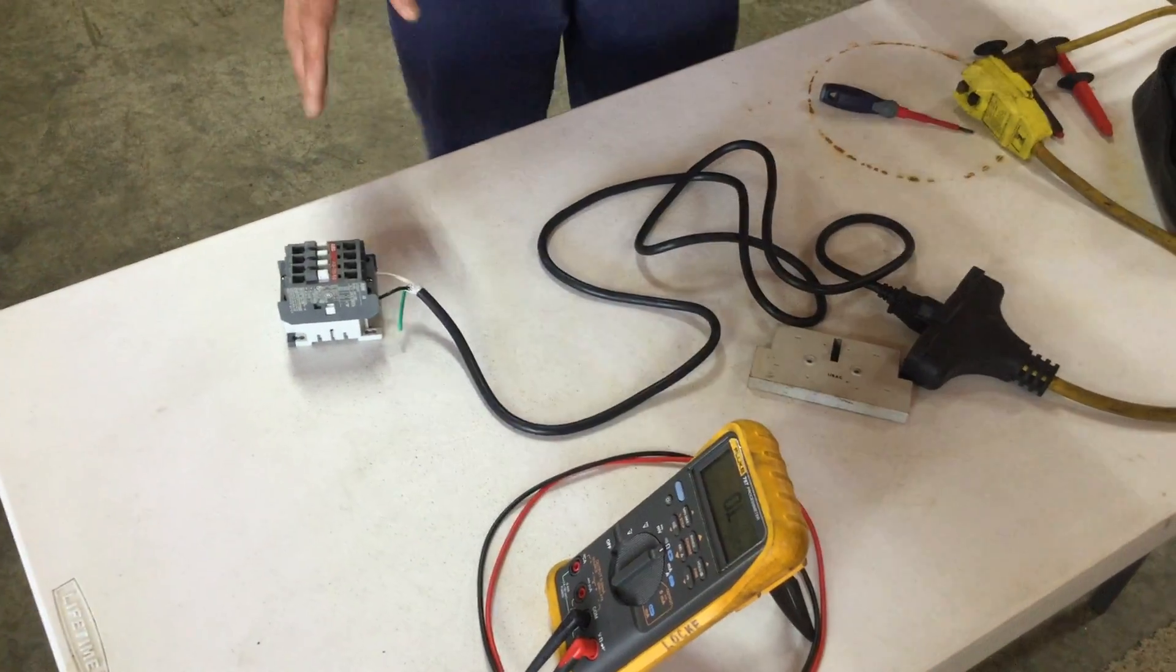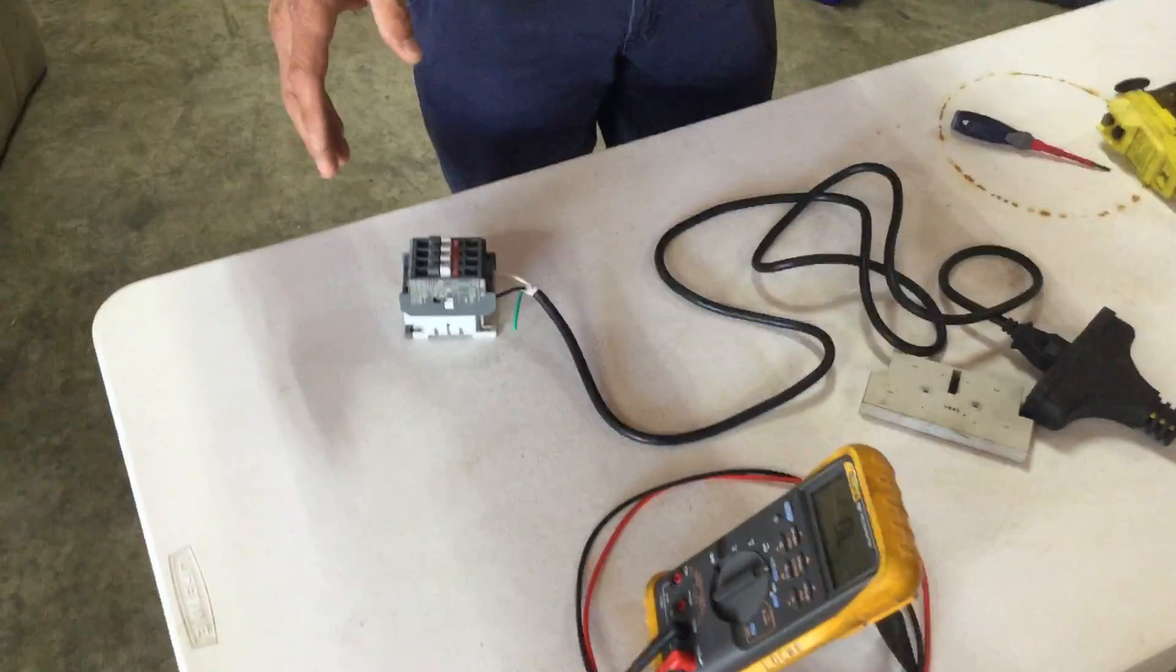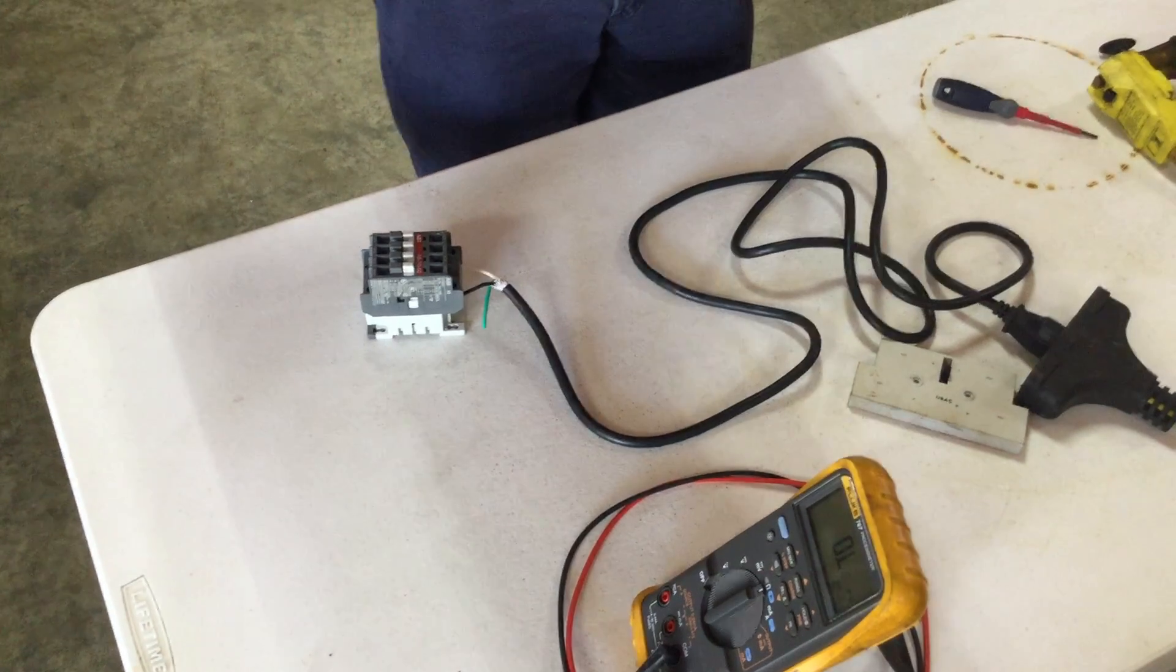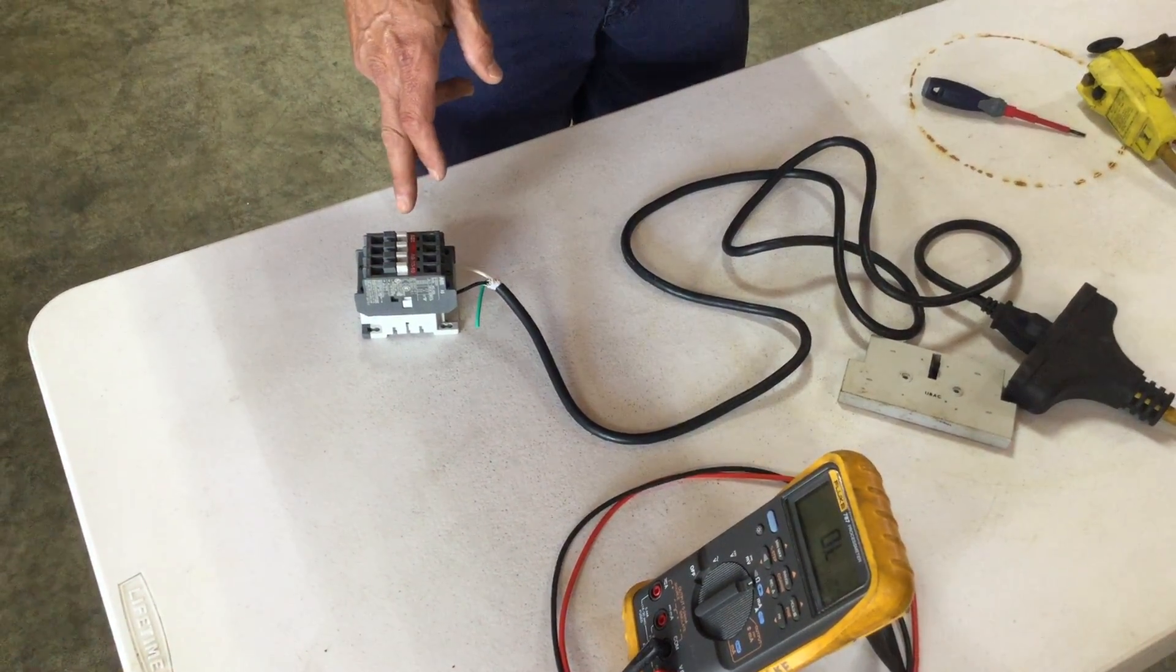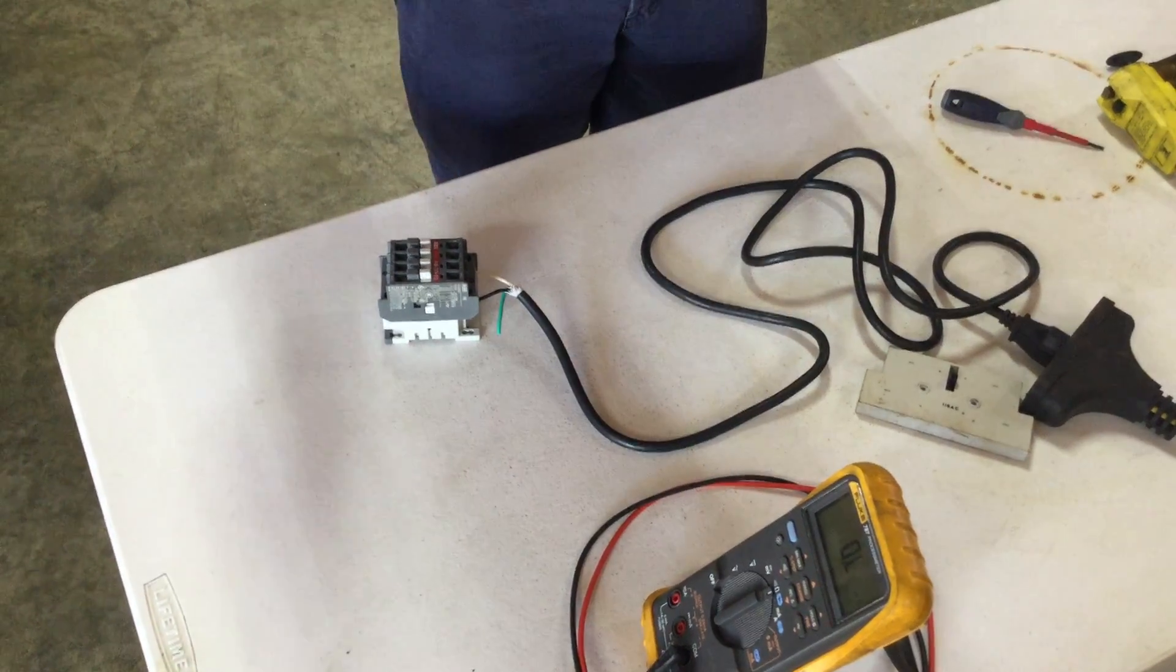We've got everything hooked up. What we're going to do just to be safe is we're going to go ahead and step back and plug the cord in over at the wall. And we should see the contactor move in, pull in.